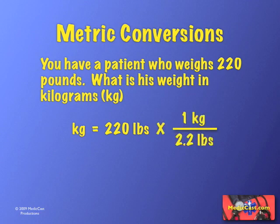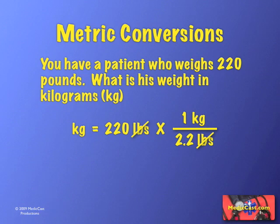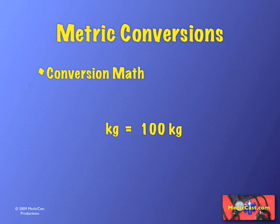I've set it up this way and you'll see why in just a second. First, cancel out the pieces of the equation that you can — get rid of the pounds. You can do that when one's on top and one's on the bottom. That will leave you with the values you were looking for if you set the equation up correctly. It's one of the ways you can check to make sure the formula is set up right. This is about setting up the equation right all the time, every time, so that you can run it the same way each and every time. So let's go ahead and run the math — 100 kilograms.